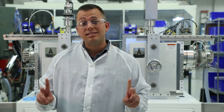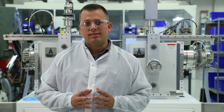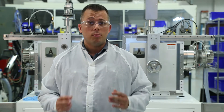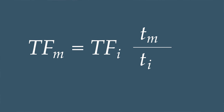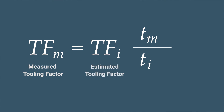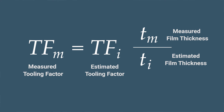To calculate tooling factor, we first must perform a deposition with the target thickness and an estimated tooling factor. This estimated factor is an educated guess based on experience or perhaps an in-depth knowledge of the geometry of your chamber. Once the deposition is complete, we simply measure the thickness of the film and plug the values into this formula. On the left-hand side, we have Tf sub m, which is the measured tooling factor — the one that we're interested in. Tf sub i is our estimated tooling factor, T sub m is our measured film thickness, and T sub i is our estimated film thickness. For our case, I'm going to guess at 75%.